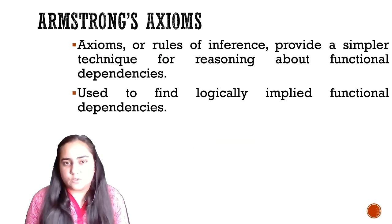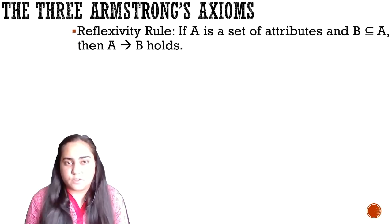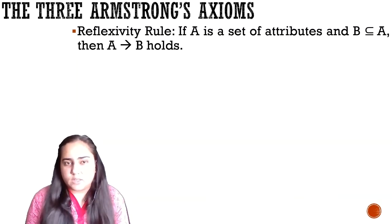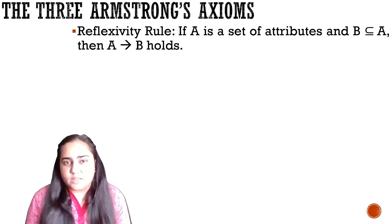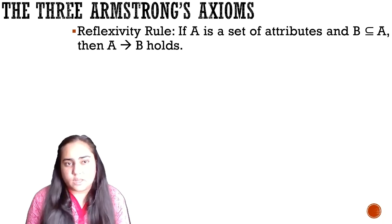There are three main Armstrong's axioms. The first one is reflexivity: if A is a set of attributes and B is a subset of A, then you can say that A determines B holds. This creates a functional dependency such as A determines A, or AC determines C. The reflexivity rule applies whenever the right-hand side is a subset of or equal to the left-hand side.